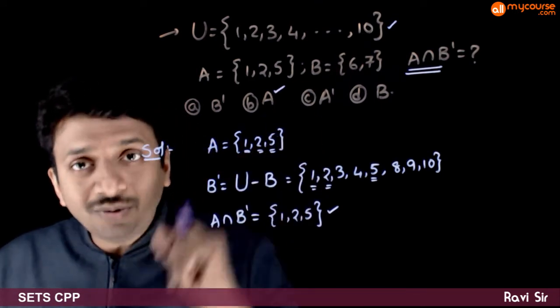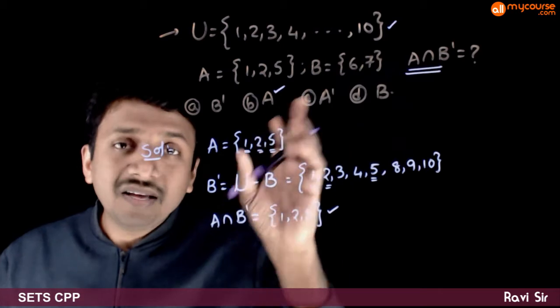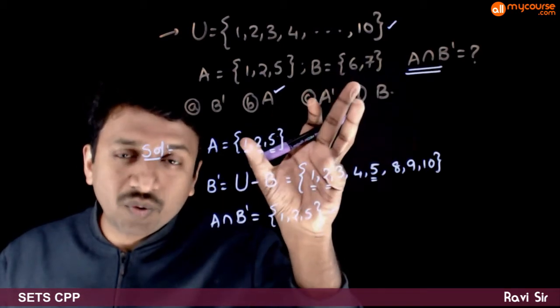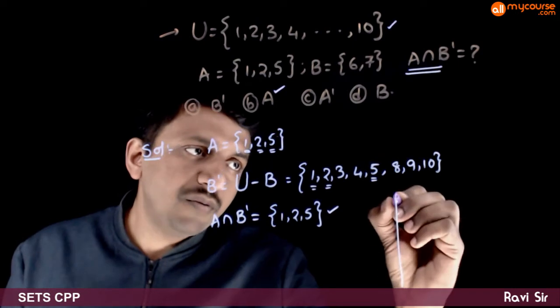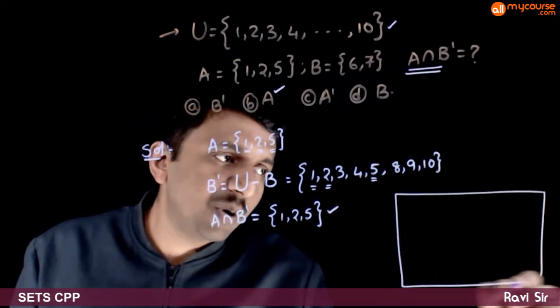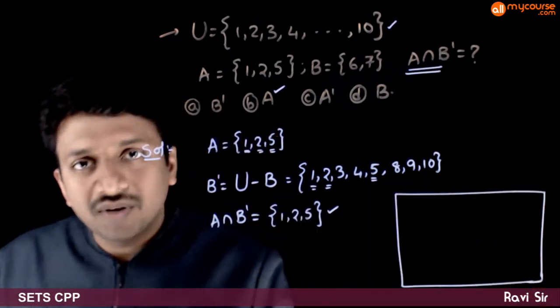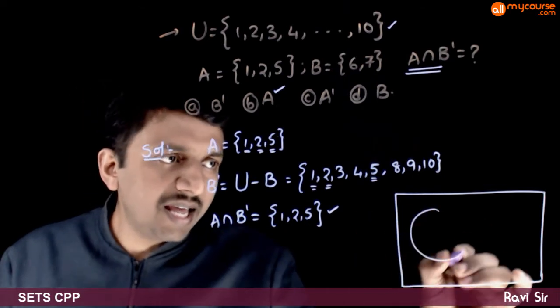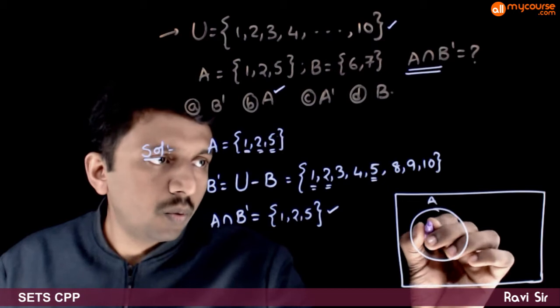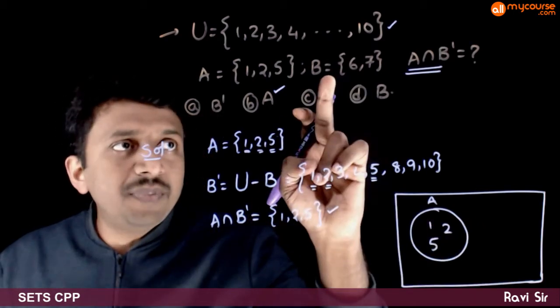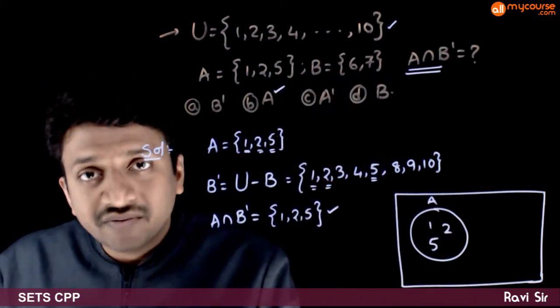So will this be always true? We will try to observe this question using a Venn diagram. If you draw the Venn diagram corresponding to this problem, let this be the universal set. Set A is the set containing 1, 2, 5.